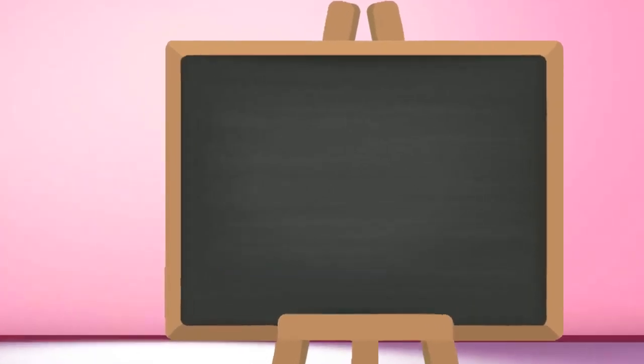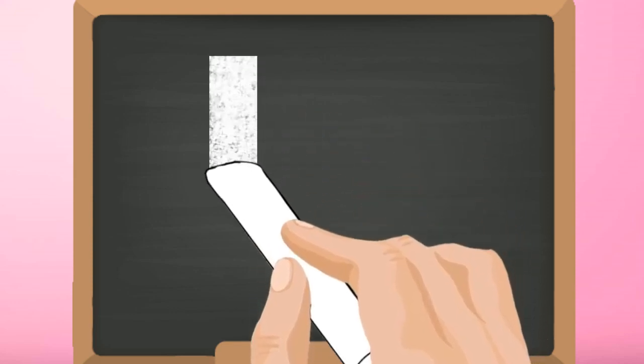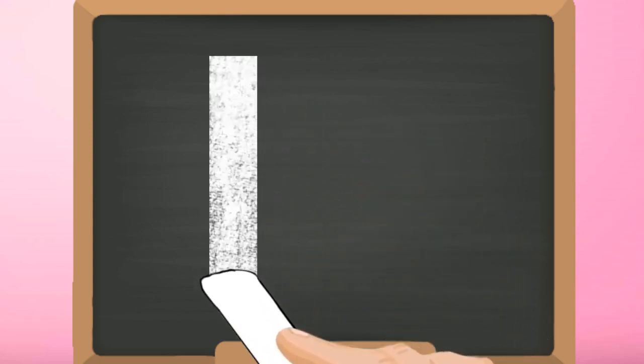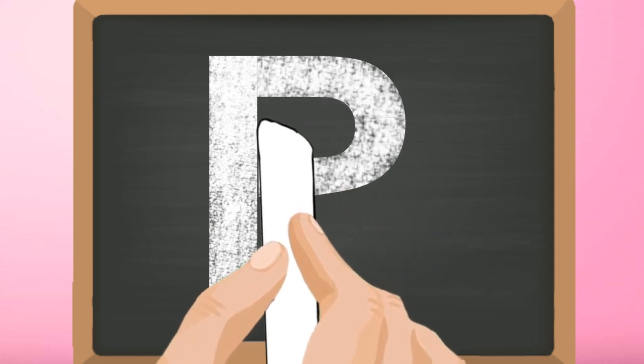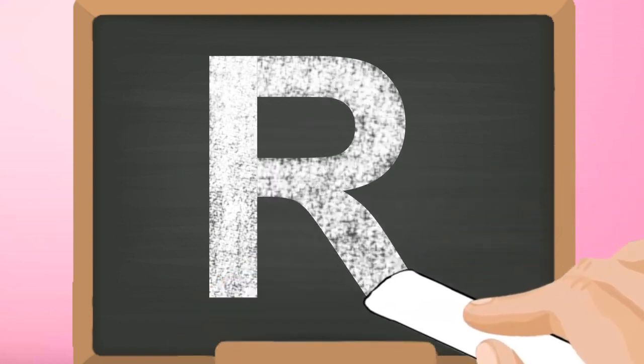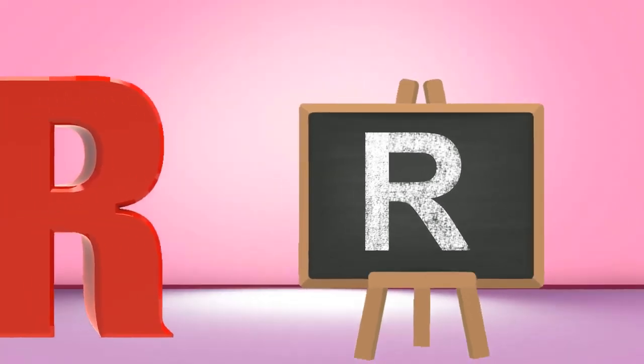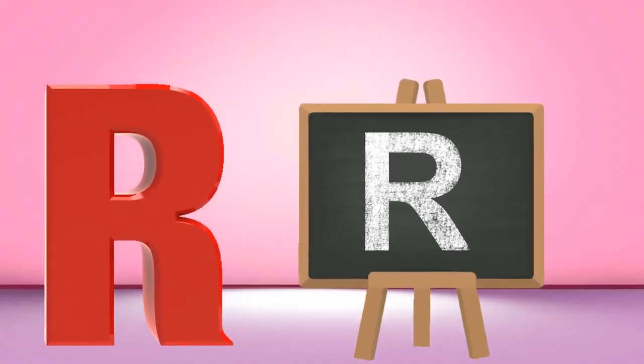Capital R. Start from the top and draw a standing line down. Go again to the top and draw a curve till the middle. Then draw a slanting line to the bottom. Capital R.